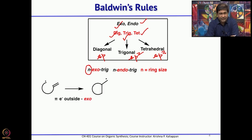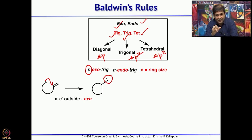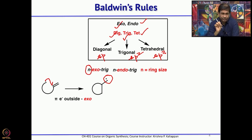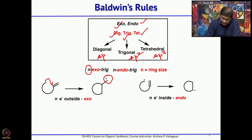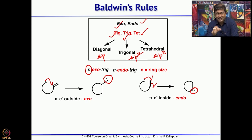When the radical is formed and adds to the double bond, it can add in two ways. First, if the final radical after cyclization is outside the ring, the whole process is called exo. When cyclization takes place and the final radical is part of the ring — inside the ring — then it is called endo. N represents the size of the ring formed; exo means the final radical is outside the ring, endo means it is inside the ring.